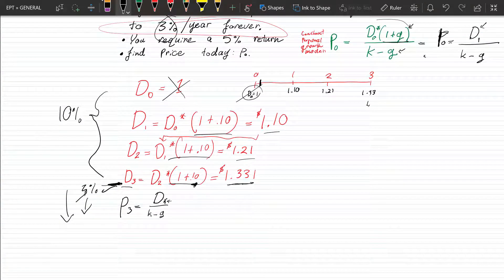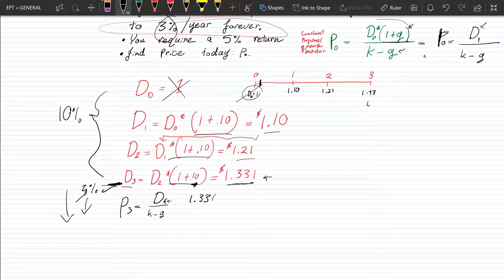So we have the last known dividend, which is 1.331. We're going to multiply that by 1 plus 0.03 to find out what the dividend in year four will be. So that's an easy one. 1.331 times 1.03. And that gives us 1.3709. Okay, so that is D four. This is D four.